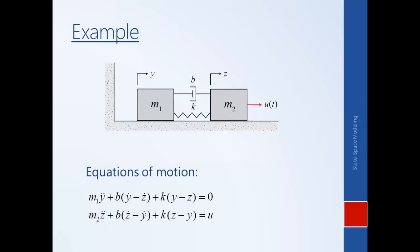Let's consider a mass-spring-damper example. These are the equations of motion — we know how to derive those by drawing free body diagrams for each of the two masses and using Newton's second law. By inspection we can see that this system of equations is not in state space form. Each equation is a second order differential equation, with a second derivative of y as a function of its first derivative and itself.